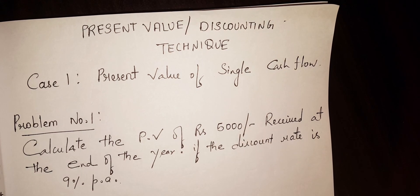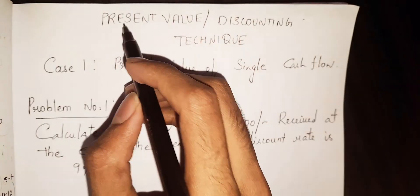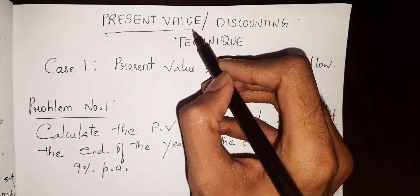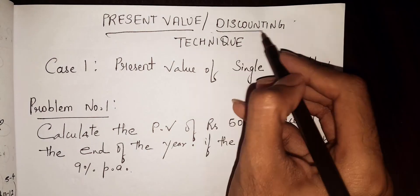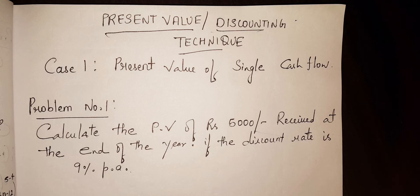Hello everyone, welcome to my YouTube channel. In this video, we'll be starting the calculation of present value. Present value is also called the discounting technique. In this, three cases will come: case number one is single cash flow, case two is uneven cash flow, and case three is even cash flow.